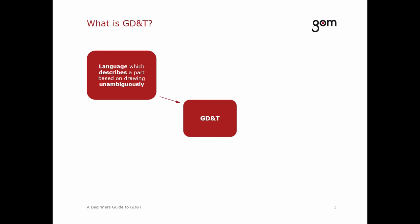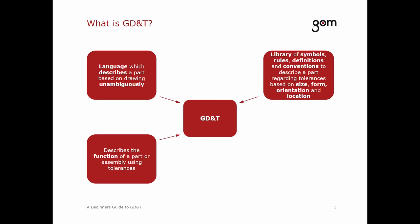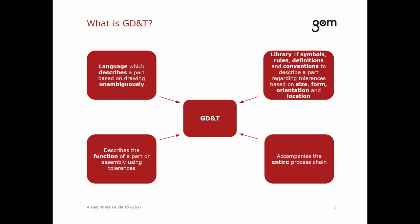Let's begin with some definitions about GD&T. First of all, it's a language that describes a part based upon drawings unambiguously. It is a library of symbols, rules, definitions, and conventions to describe a part regarding tolerances — tolerances based on size, form, orientation, and location. It describes the function of a part or assembly using tolerances, and it accompanies the entire process chain from design over manufacturing to metrology.